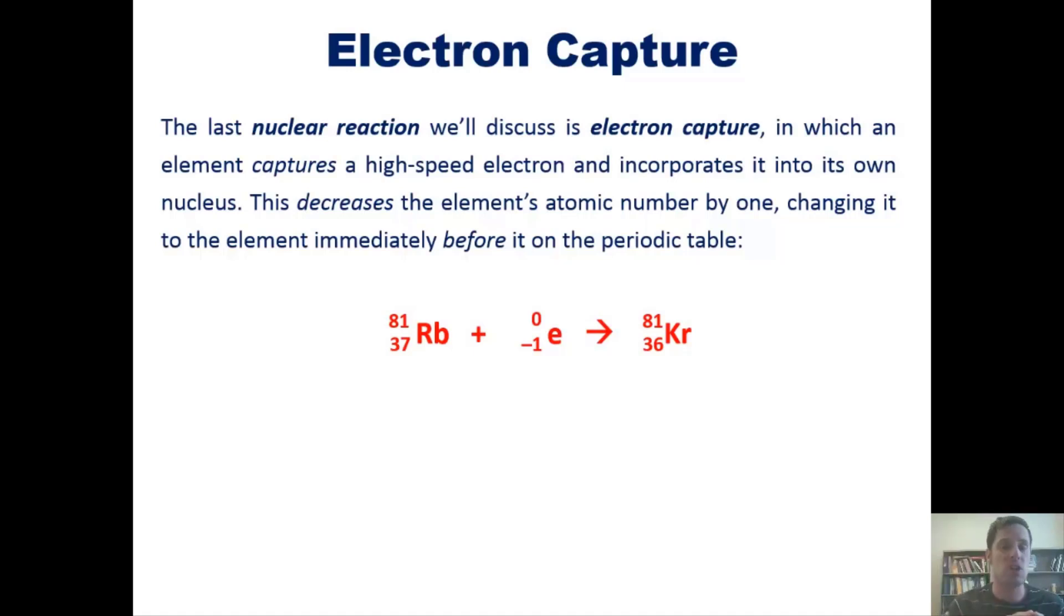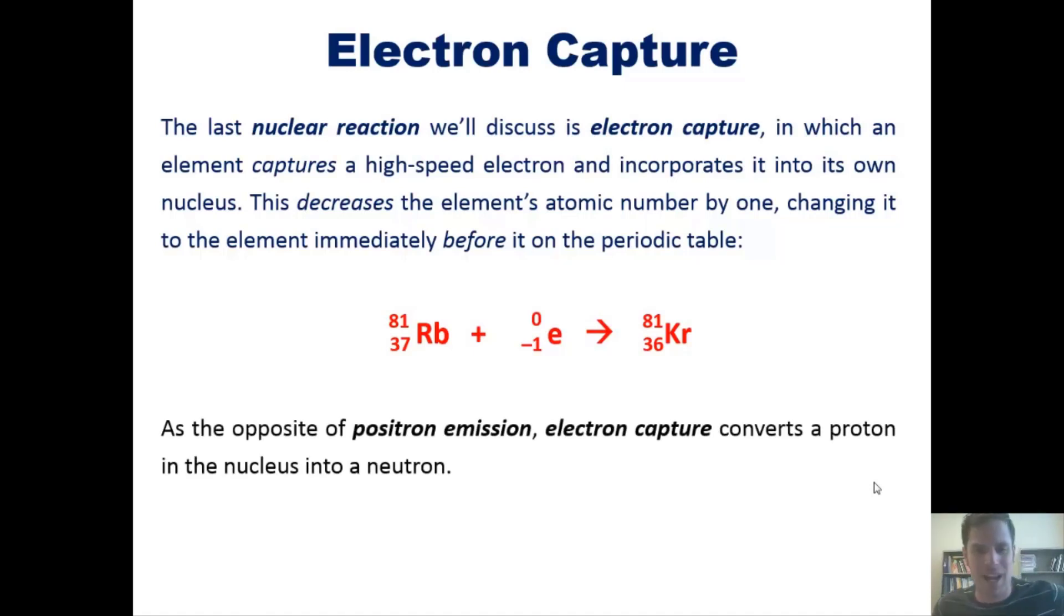When it does that, it combines with a proton and turns into a neutron. You can see this rubidium has 44 neutrons and 37 protons, but the krypton has 45 neutrons and 36 protons. We've lost a proton and gained a neutron. As this electron came into the nucleus, it combines with one proton, and the positive charge in the proton and negative charge in the electron combine to form a neutron. This is the opposite of positron emission.